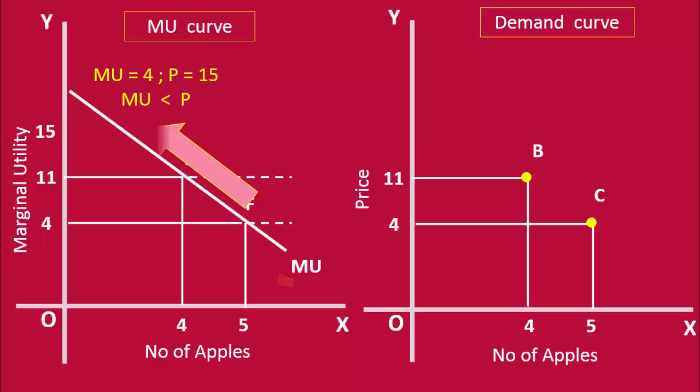He has no other option but to reduce his purchase to increase his marginal utility. He buys 3 apples. The marginal utility of the third apple is 15 units. This quantity equates his marginal utility with price.